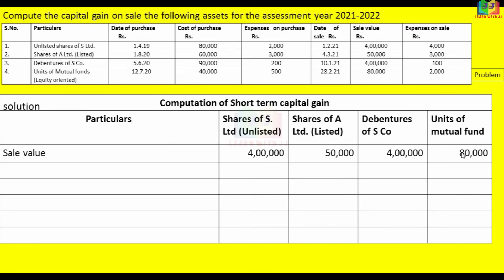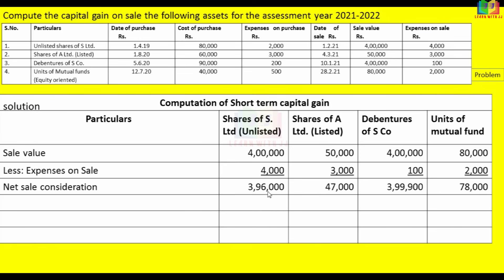Expenses on sale: unlisted shares — 4,000; listed shares — 3,000; debentures — 100; mutual fund — 2,000. This is deducted to get the net sale consideration: unlisted shares — 3,96,000; listed shares — 47,000; debentures — 3,99,900; mutual fund — 78,000.